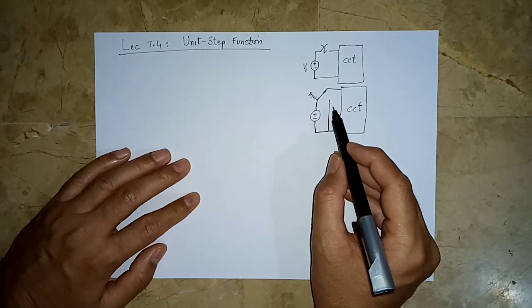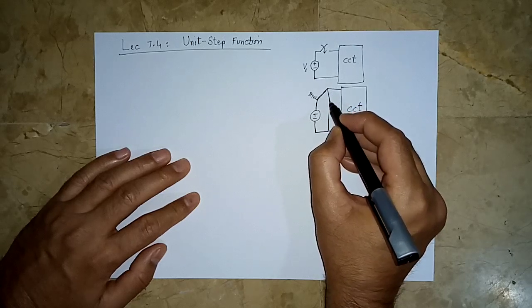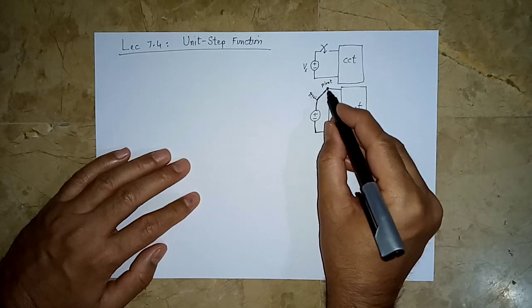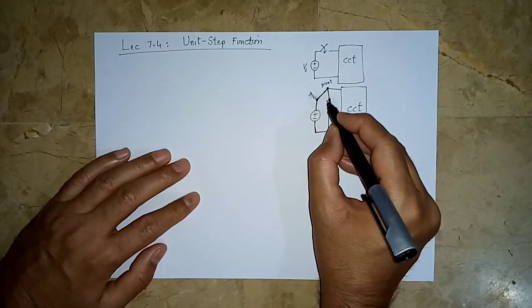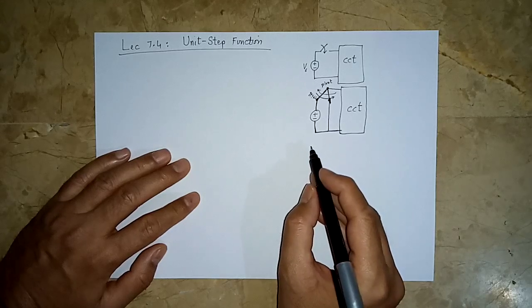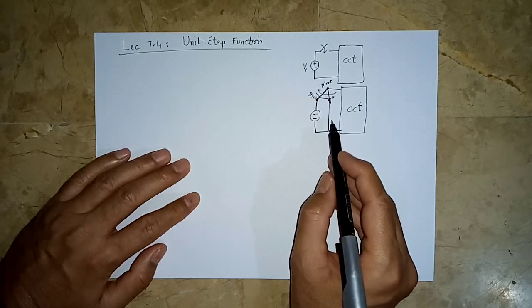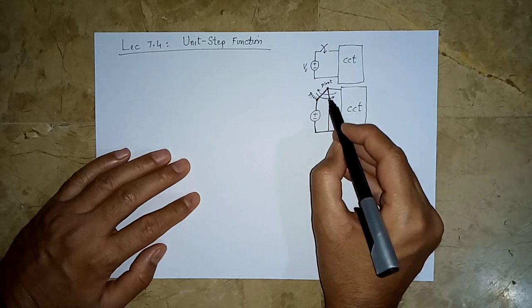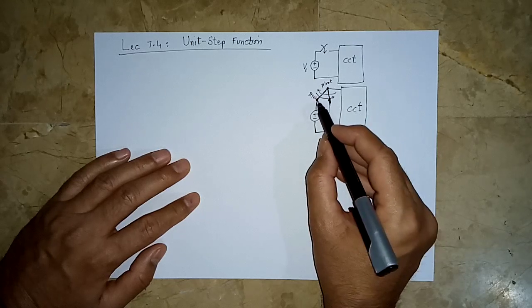We have a switch here with a pivot or hinge. This part can move — it can make connection at one point or another, so the switch can move in this direction or that direction. Initially the switch is making contact at one point, and then suddenly — in no time — the switch is thrown to the other point.